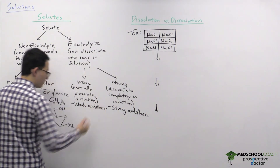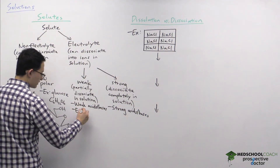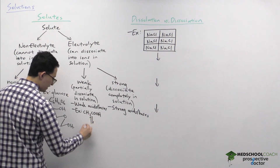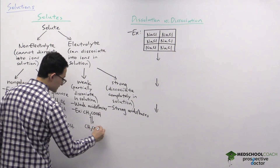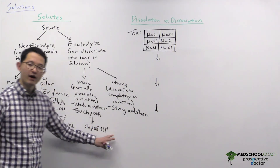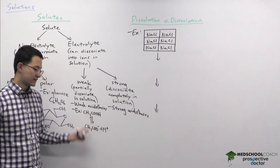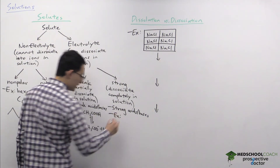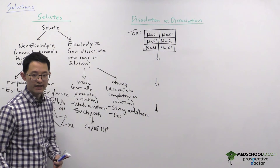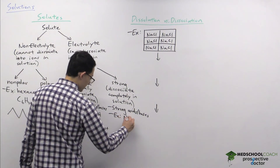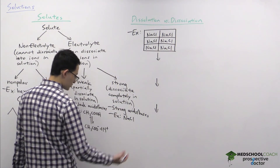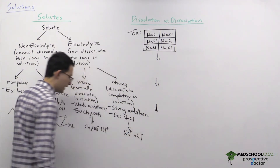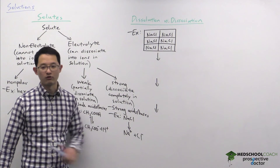A good example of a weak electrolyte is acetic acid, CH3COOH. It dissociates in solution to form CH3COO⁻ and H⁺, so it forms some ions, but not all acetic acid molecules dissociate. In contrast, a strong electrolyte like HCl, sodium hydroxide, or sodium chloride will completely dissociate in solution to form sodium cations and chloride anions.